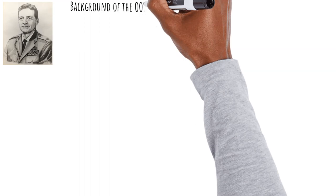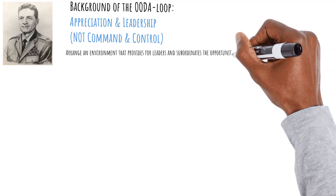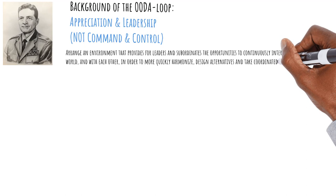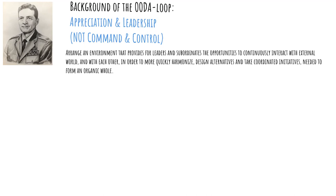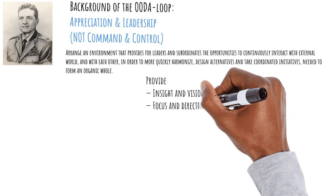Finally, on the background: appreciation and leadership. Boyd prefers this label to command and control. He finds that label too restricting. Quote: Command, by definition, means to direct, order, or compel, while control means to regulate, restrain, or hold to a certain standard, as well as to direct or command. He prefers to use appreciation and leadership as a label. This function has the responsibility to arrange an environment that provides, for leaders and subordinates, the opportunities to continuously interact with the internal and external world, and with each other, in order to more quickly harmonize, design alternatives and take coordinated initiatives, needed to form an organic whole. It needs to have an implicit orientation that provides insight and vision, focus and direction, adaptability, and security.